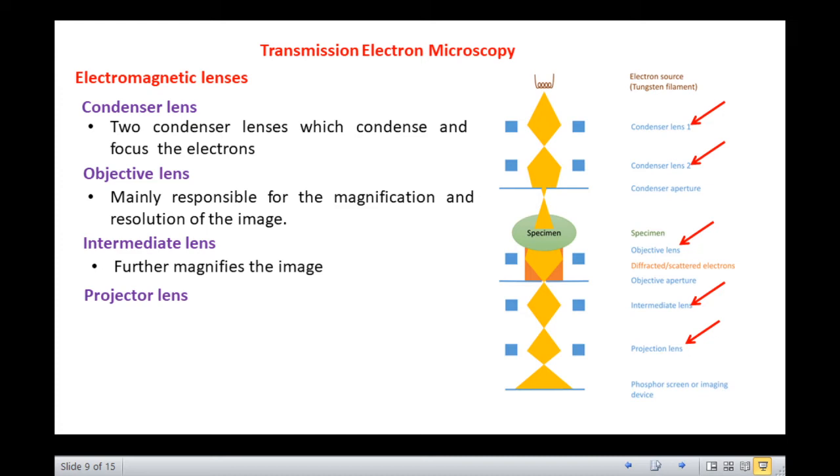Yet another electromagnetic lens in the TEM column is the projector lens. The projector lens projects the focused image onto the fluorescent screen at the base of the column or to a CCD camera beneath it. It converts electrons into photons. If you have been observing this figure, you can see certain apertures.